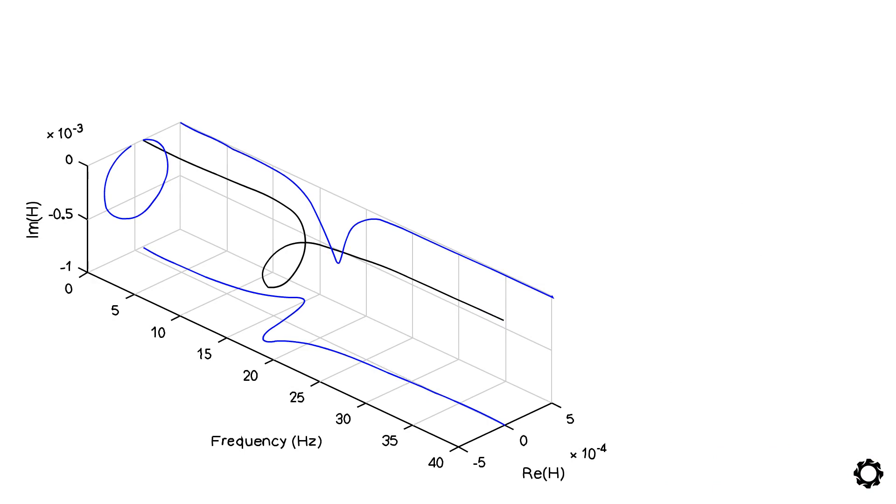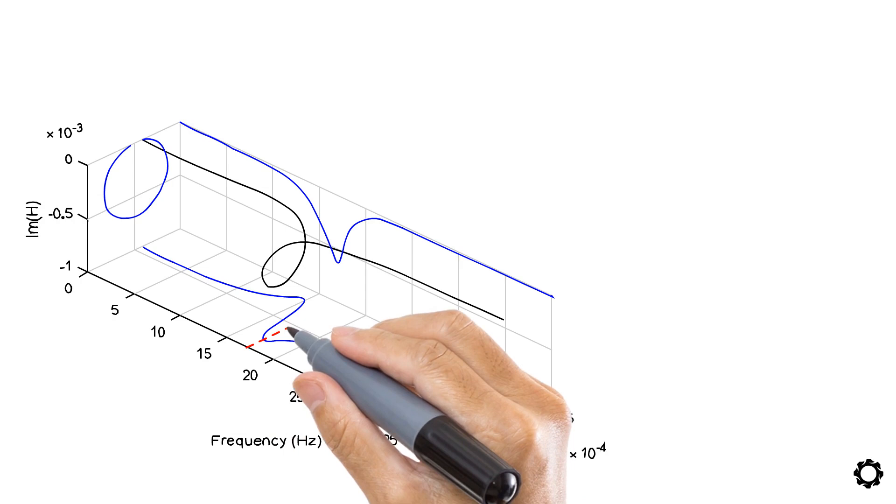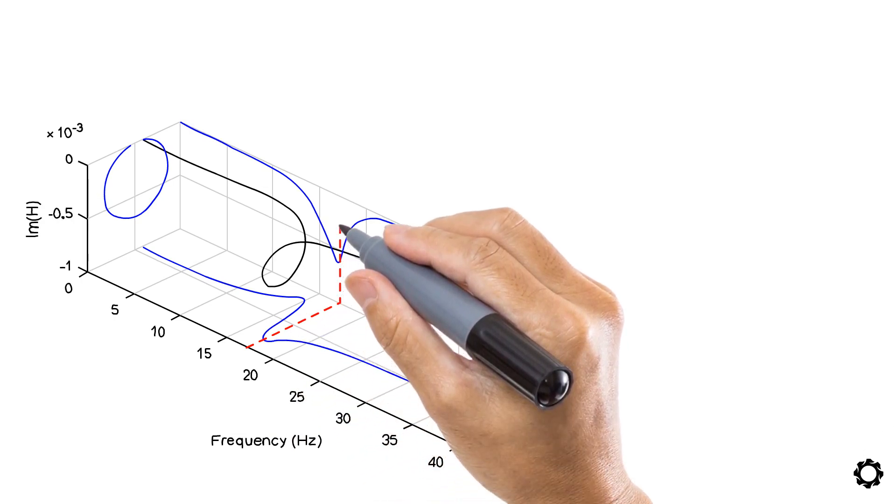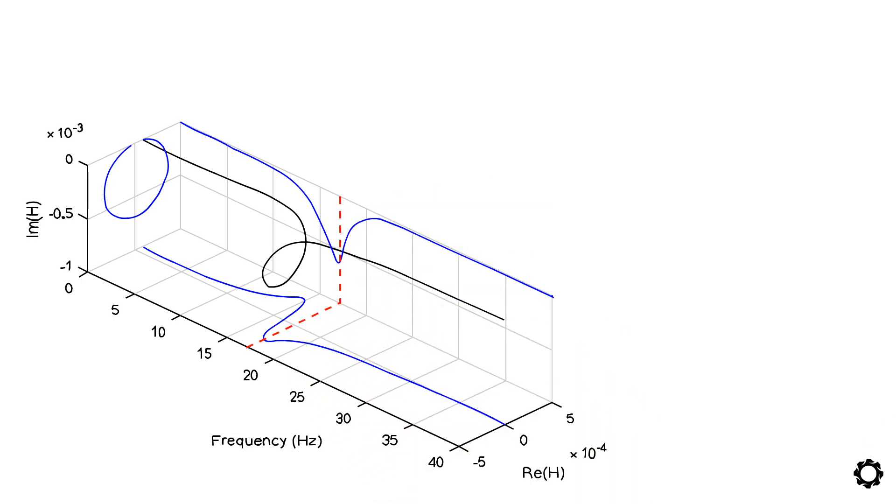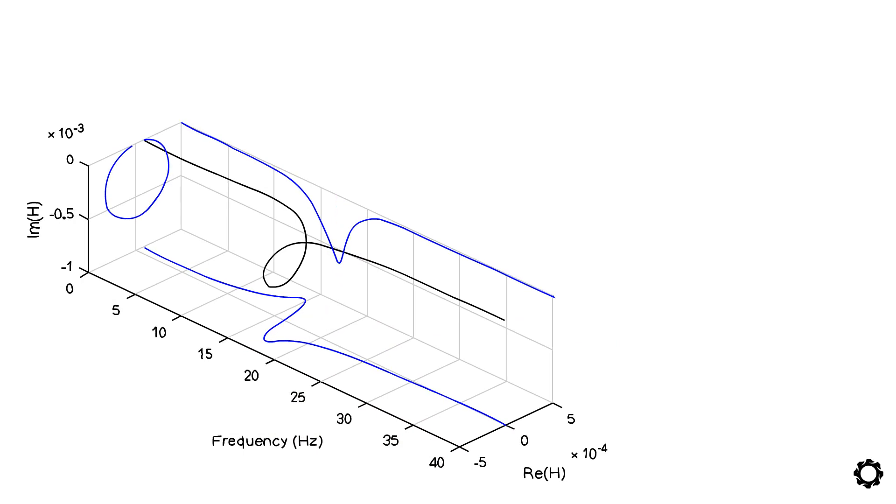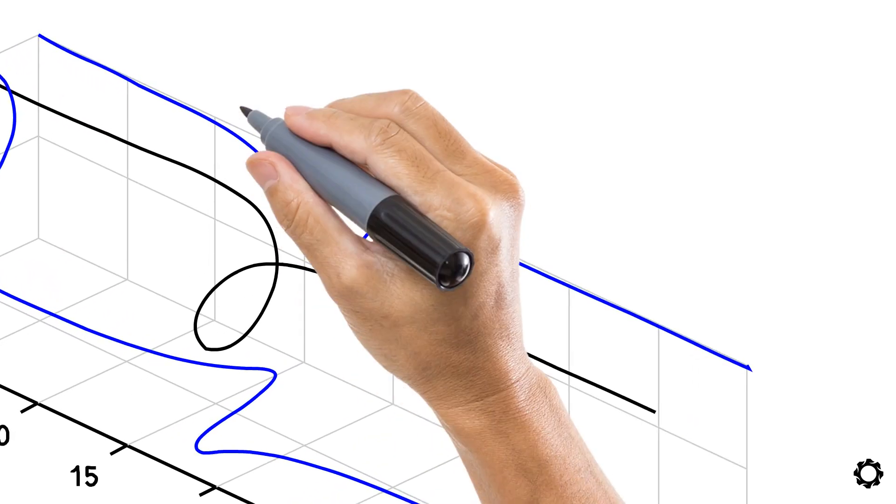Let's go back to the frequency response function plot. The plot gives a single peak amplitude at a resonance frequency as the system has a single degree of freedom. Let us focus on the magnitude only, the absolute positive value of the real and imaginary part of the FRF plot for now, and zoom in around the peak region.